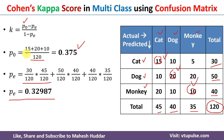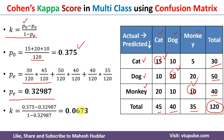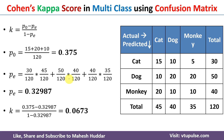With p0 = 0.375 and pe = 0.32987, we can calculate k using the equation, giving k = 0.0673. This is slightly greater than 0 — about 6.37 percent agreement between actual and predicted classes. This is how we calculate Cohen's kappa score for both binary and multiclass classification problems given the confusion matrix. I hope the concept of Cohen's kappa score is clear.